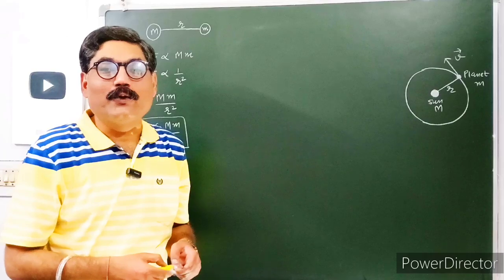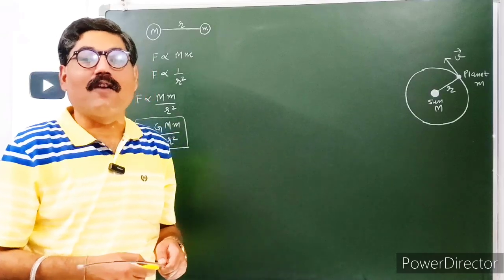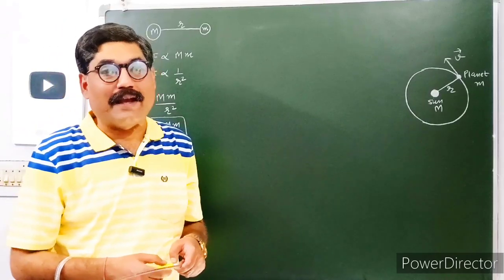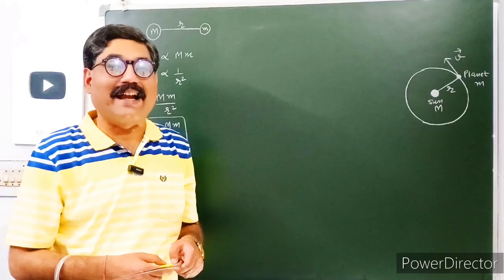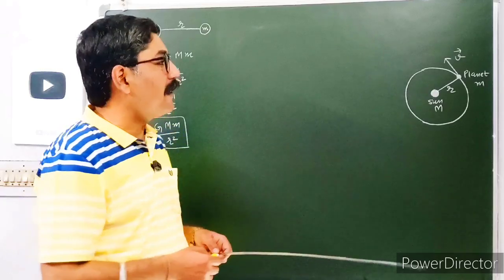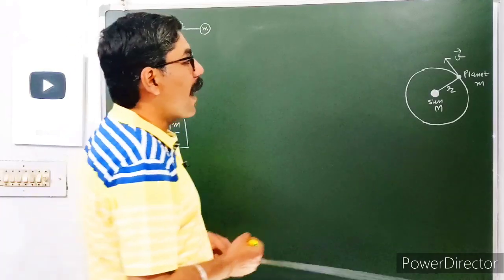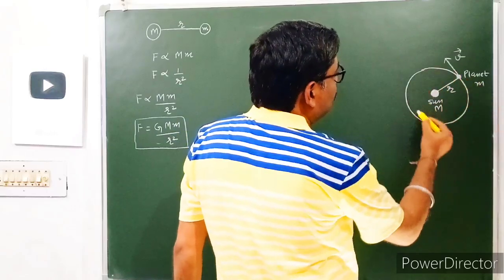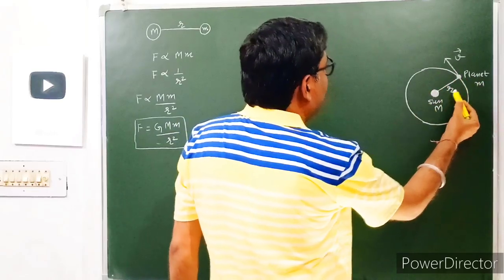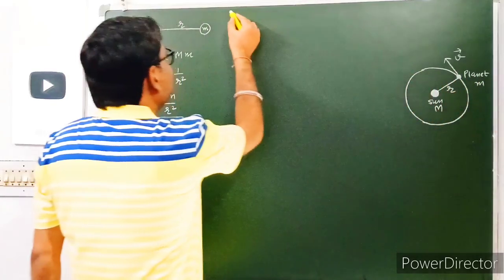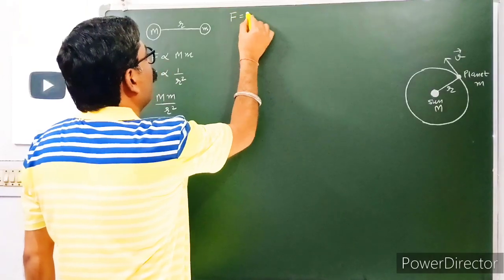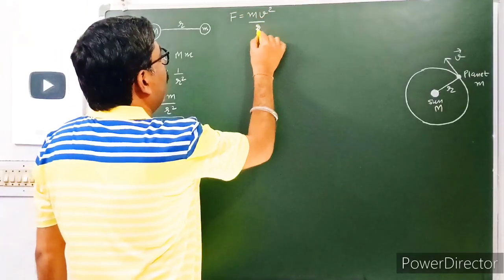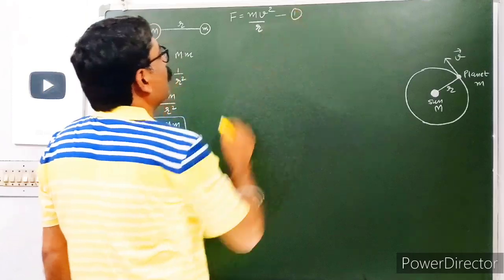Now, you know that if you want to revolve a body in a circular path, you need a special kind of force known as centripetal force. The centripetal force required to make this planet revolve around the sun in a circular orbit of radius r will be equal to mV²/r. Let us mark this as equation number 2.